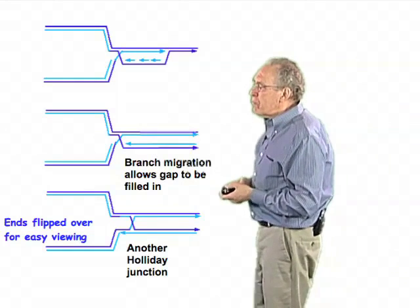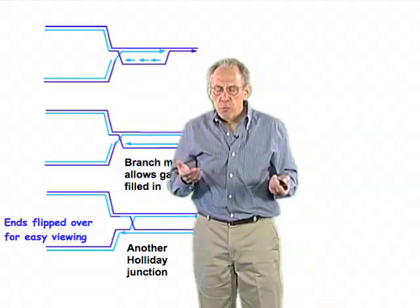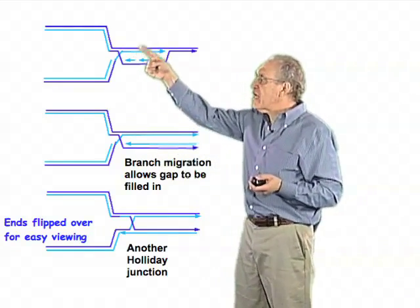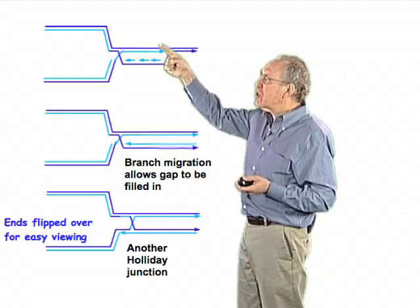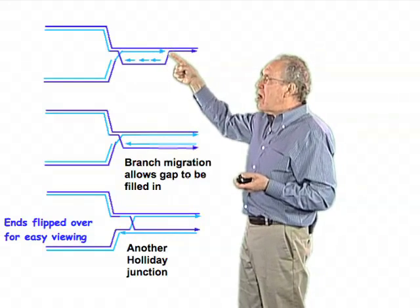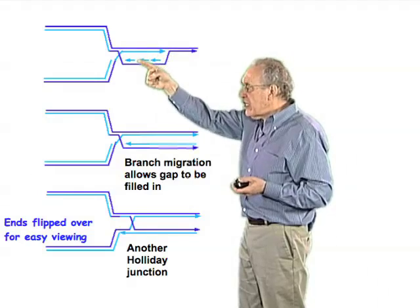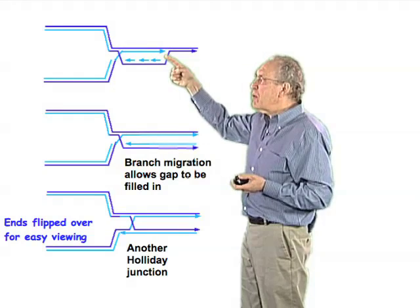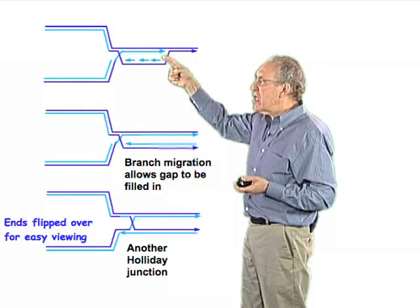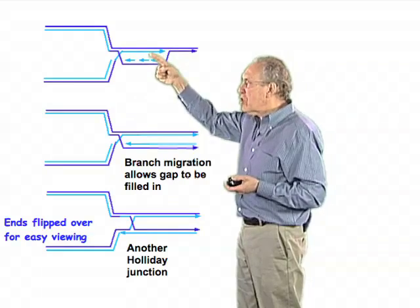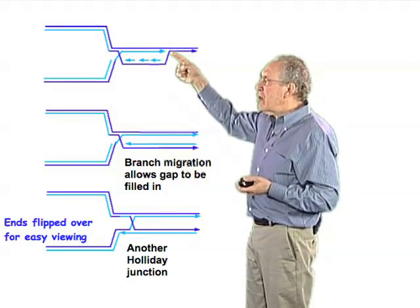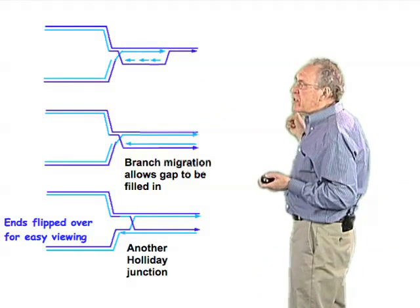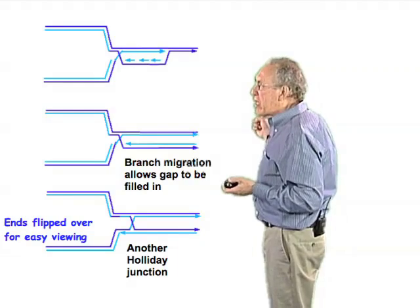To go back to the process that we were talking about, the RecA filament can carry out this strand exchange process. That leads to the displacement of the D-loop — the strand that used to be part of the original double-stranded DNA molecule — and there can also now be the establishment of new DNA replication. Theoretically, this could go all the way to the end of some replicating structure.